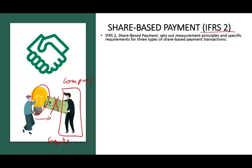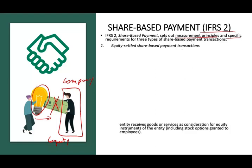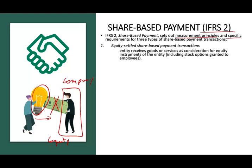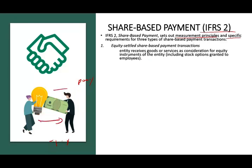IFRS 2, which covers share-based payment, sets out measurement principles and specific requirements for the three types of share-based payment transactions. The first is equity-settled share-based payment: the entity receives goods or services as consideration for equity instruments of the entity, including stock options granted to employees. Simply put, we receive the goods but we don't give cash — we could give stock options, for example paying our employees with stock options.